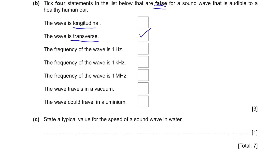The frequency of the wave is 1 Hz. The range that humans can hear is from 20 Hz to 20 kHz. Therefore, if it's 1 Hz, it's not in this range — so it's false. If it's 1 kHz, it's in the range, so it's correct. The frequency of the wave is 1 MHz — this is also outside the range, so it's wrong. The wave travels in a vacuum — if the sound wave is in a vacuum, we cannot hear it, so it's wrong. The wave could travel in aluminum — this has nothing to do with hearing it, so it's correct.